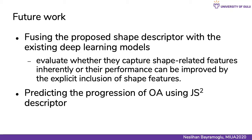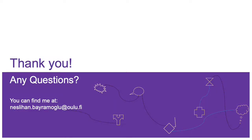Two important topics for future investigation: firstly, using the proposed shape descriptor with existing deep learning models to evaluate whether they capture shape-related features inherently, or whether performance can be improved by the explicit inclusion of shape features. Secondly, predicting the progression of OA using our descriptor. Thank you very much — you can reach me at neslihan.bayramoglu at oulu.fi.